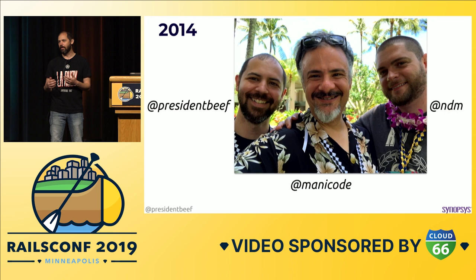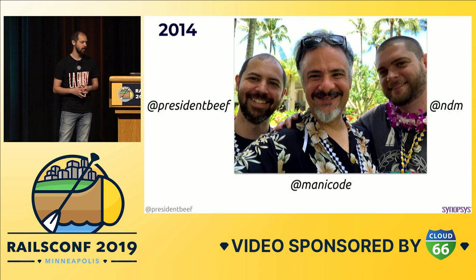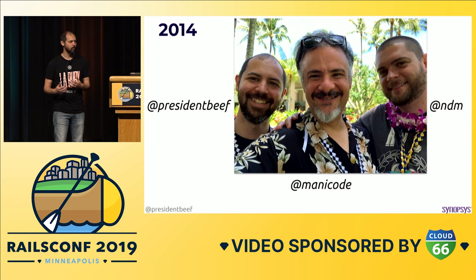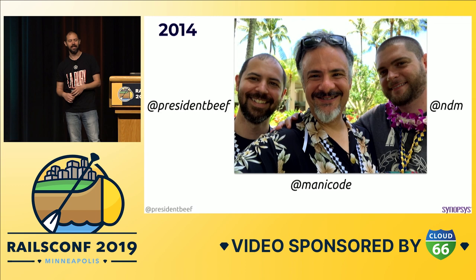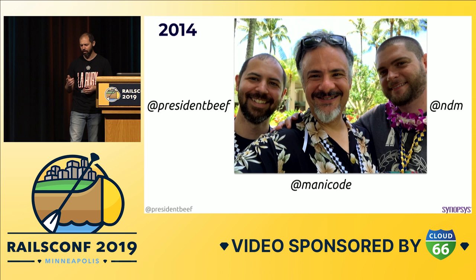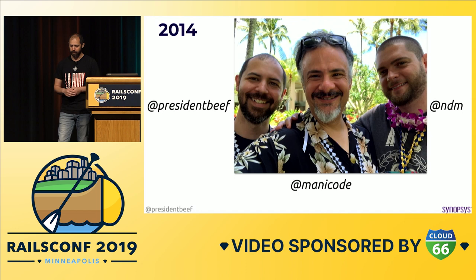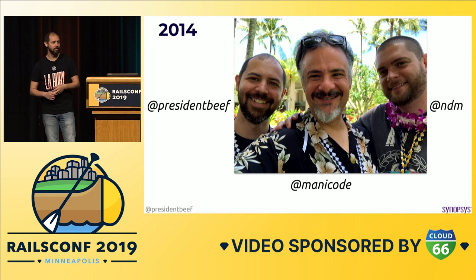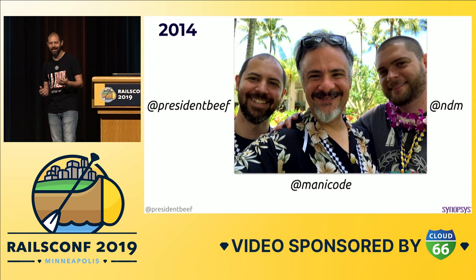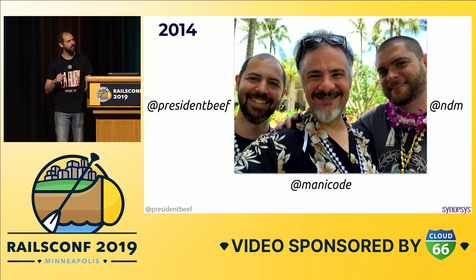Jim Manico is a well-known figure in the web application security space. He started a few companies and written at least one book. So to have someone like this reaching out and saying he'd be interested in helping me start a business — I was like, wow, that's pretty crazy. I followed up with him later and he confirmed: yeah, let's do it. He also said I should really bring in Neil Mattitol, who was the number two committer to Brakeman and also my coworker. So we brought Neil in — that made a lot of sense.